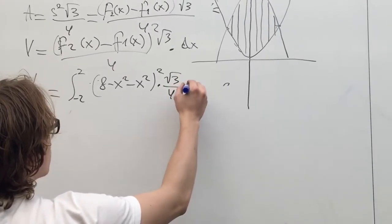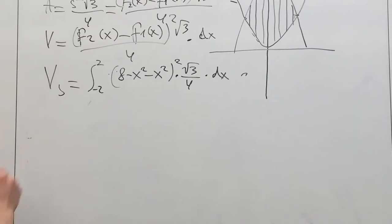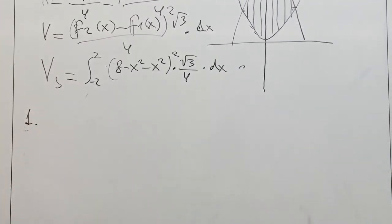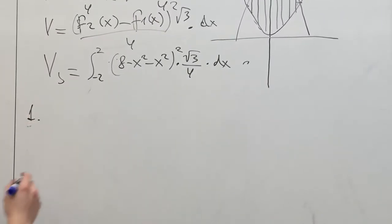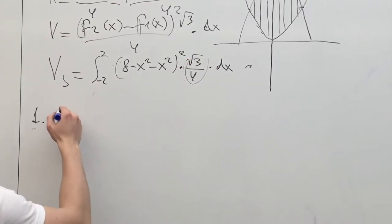The side of each triangle equals 8 minus x squared minus x squared. So we have the integral from -2 to 2 of (8 - 2x²)² times square root of 3 over 4 times dx.